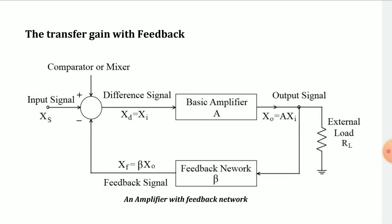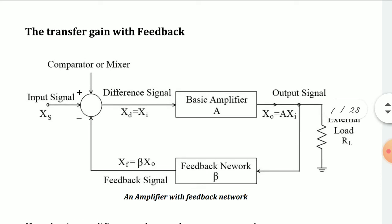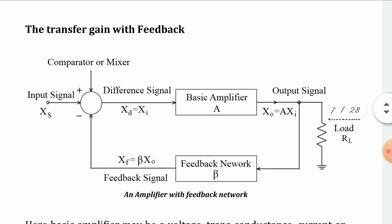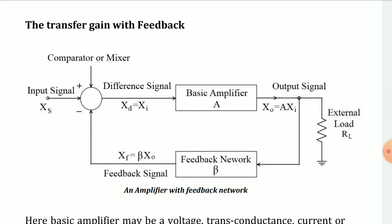The feedback signal X_F is also returning back from the output of the amplifier, and X_F equals beta times X_O, where beta is the gain of the feedback network and X_O is the output signal. The output X_O depends on the input to the amplifier and the gain of the basic amplifier: X_O equals A times X_I.